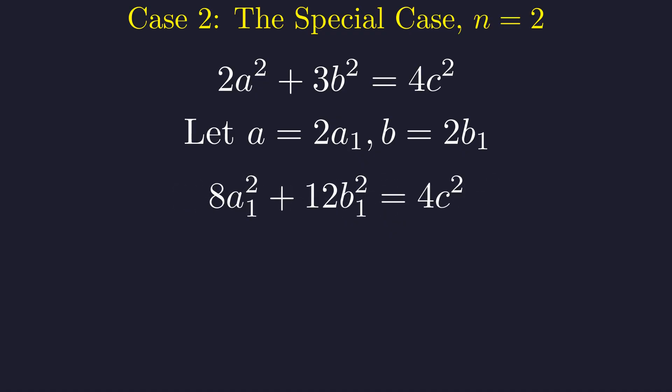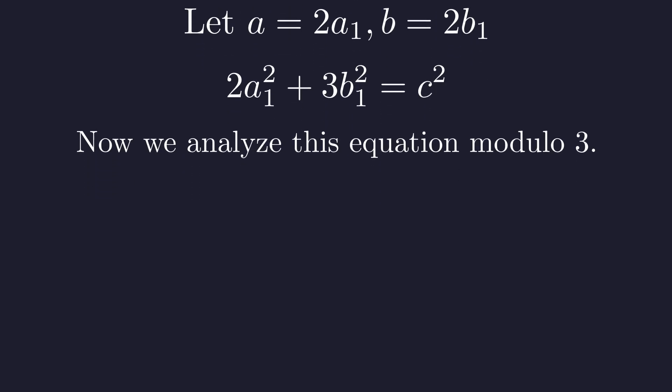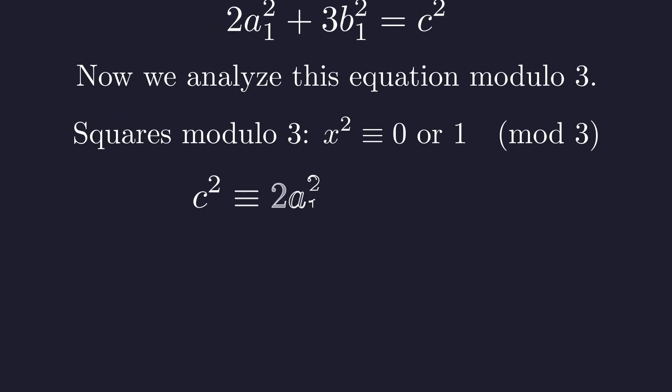Notice that every term is divisible by four. Let's divide the entire equation by four. Dividing by four gives us this simplified form. Now comes the key insight: we'll analyze this equation modulo three. A fundamental fact: squares modulo three can only be zero or one. Reducing our equation modulo three, the term three times b₁ squared disappears, leaving us with this congruence.